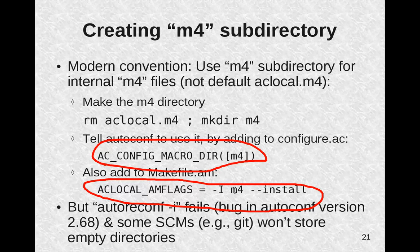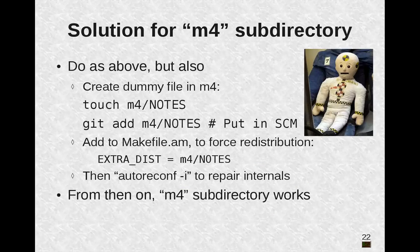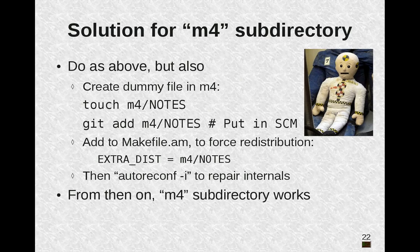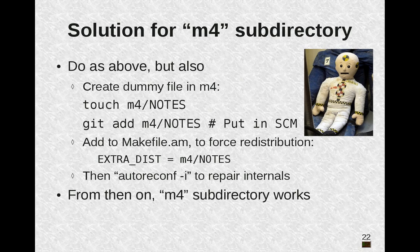So if you're using autoconf 2.68, do the above: create the m4 subdirectory and configure autoconf and automake to use it. However, also create a dummy file in m4. If you're using SCM, make sure that dummy file is put in your SCM. Also add to makefile.am an EXTRA_DIST entry for the m4 directory and the dummy file — that will force distribution of that file even though it's not a source file. Then finally run autoreconf -i to repair everything, and from then on your m4 subdirectory is just going to work.